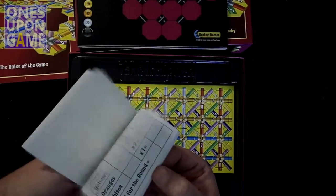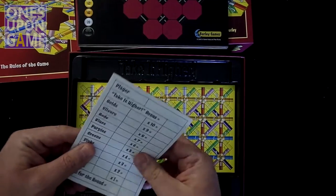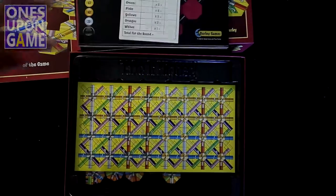Score pad, which you'll immediately run out of. So hopefully there's a score app or something, or just going to end up using pieces of paper.